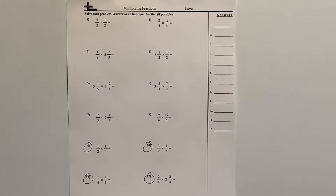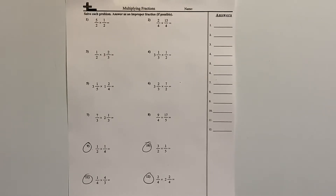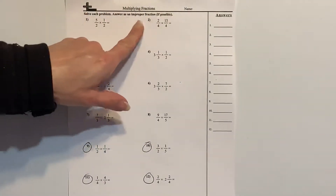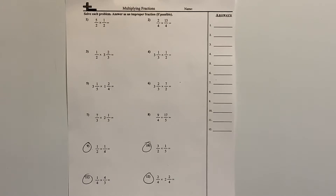We're going to continue with our discussion about multiplying fractions. What we're going to do today is multiply these fractions, and it says you can leave them as improper fractions. So we're going to leave them as improper fractions, and we'll come back and revisit that and try to convert those into mixed numbers.